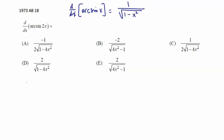So our derivative of arcsine of 2x is going to be 1 over the square root of 1 minus whatever the inside function is, quantity squared,